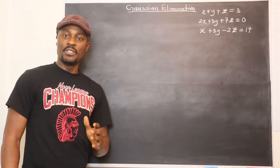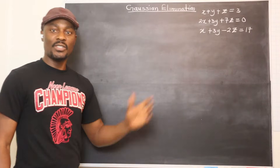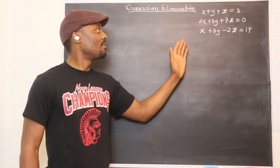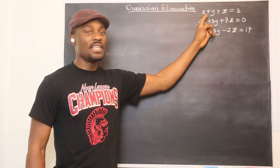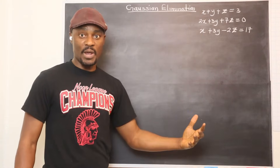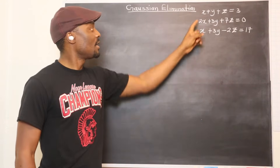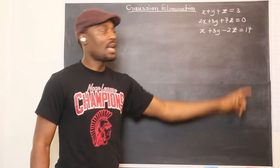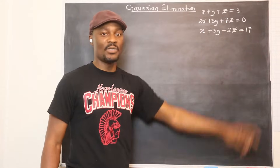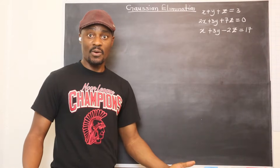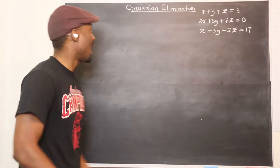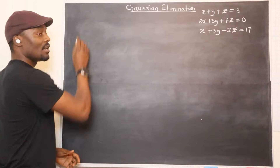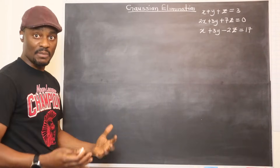The first thing you want to do is just identify the coefficients of each term in each of the equations. So here you have one, one, one. And the answer to that equation is three — that's the result of that. So what I'm going to do is create the first matrix.